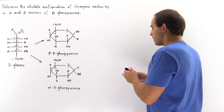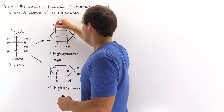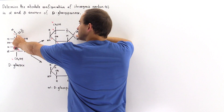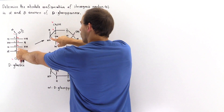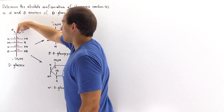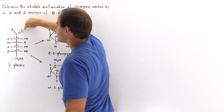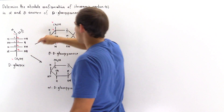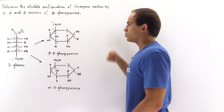In the ring form, this is our first carbon, second carbon, third carbon, fourth carbon, fifth carbon, and sixth carbon. So carbon number one is this carbon here. When this oxygen acts as a nucleophile and forms a bond with this carbon, eventually this oxygen is protonated to form the hydroxyl group, and this oxygen is deprotonated to form the oxygen bonded to our two carbon atoms.